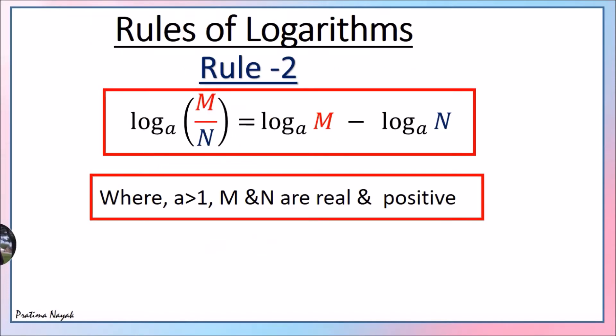Rule 2: When dividing two numbers with the same base, the exponents are subtracted. Log base a of (m/n) equals log base a of m minus log base a of n. The conditions are the same: m and n are both real and positive, and a is always greater than 1.